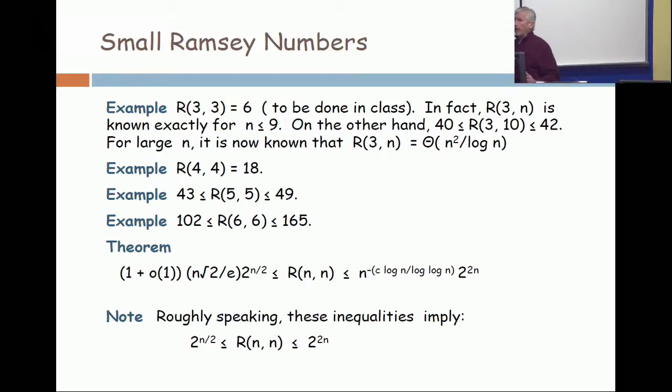So, the Ramsey number r(n,n) is somewhere between 2 to the n over 2 and 2 to the 2n. All right, let's just kind of wrap our heads around that.